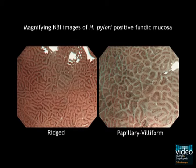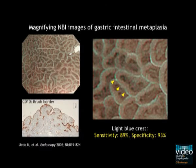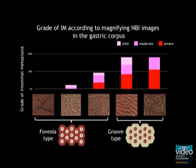Gastric corpus mucosa that has atrophy and intestinal metaplasia have a ridge surface structure similar to the antral mucosa, or have a papillary or villiform surface structure similar to intestinal mucosa. Moreover, on the surface of epithelial crests of intestinal metaplasia, blue whitish lines of light can be seen — called the light blue crest. This is a specific finding for gastric intestinal metaplasia and has a strong association with the presence of CD10 positive brush border. In summary, foveolar-type mucosa in the gastric corpus is less likely to have intestinal metaplasia, whereas groove-type mucosa in the corpus is likely to have intestinal metaplasia.